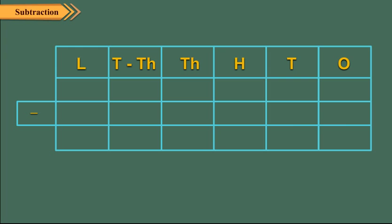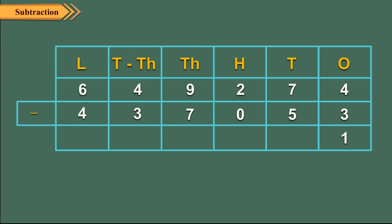As usual, we arrange the numbers in columns. Subtract the ones: 4 ones minus 3 ones is equal to 1. So write 1 in the ones column. Subtract tens: 7 tens minus 5 tens is equal to 2 tens. Write 2 in the tens column. Subtract hundreds: 2 hundreds minus 0 hundreds is equal to 2 hundreds. Write 2 in the hundreds column.